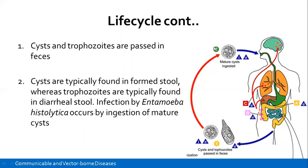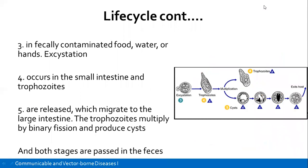Infection by Entamoeba histolytica occurs by ingestion of a mature cyst, normally found in fecally contaminated food, water, or hands. Once the cyst is taken into the mouth, it goes through the esophagus down to the stomach, where hydrochloric acid causes the cyst to open up — a process called excystation. This changes the morphology of the protozoan and it becomes a trophozoite, a form able to move fast and penetrate through intestinal walls.